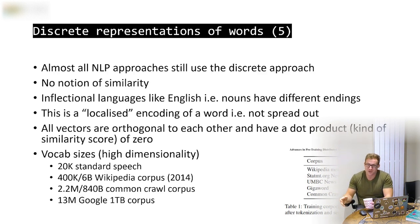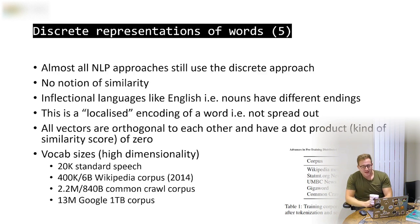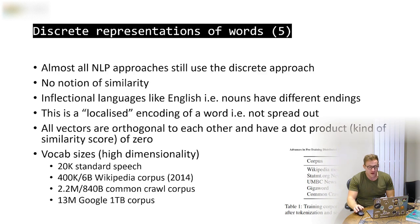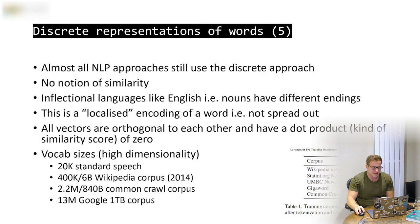If we use one-hot encoding, vocabulary sizes skyrocket. Standard speech has around 20,000 words. Wikipedia has about 400,000 unique words and 6 billion words in the corpus. The Common Crawl corpus from Google has 2.2 million unique words and 840 billion words. The Google 1-terabyte corpus has 13 million words. It's absolutely insane — you can see very quickly that discrete representations of words become impractical at this scale.